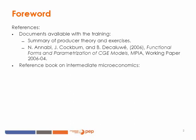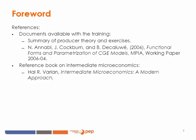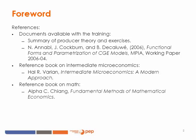I suggest that throughout the training, but also as future reference, you have in hand a reference book on intermediate microeconomics. I suggest the book from Varian, but you can use whatever book you have on intermediate microeconomics. Also, I suggest that you have in hand throughout the modeling process a reference book on mathematical aspects. I suggest a book from Chang, but if you'd rather use another book, you may do so.